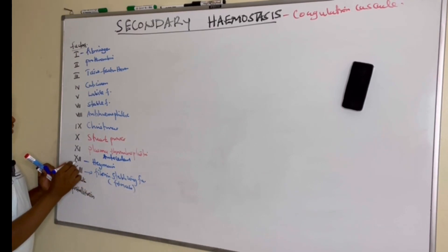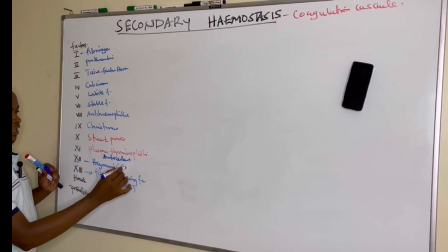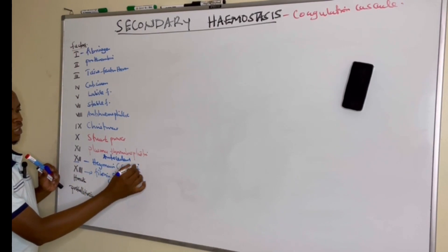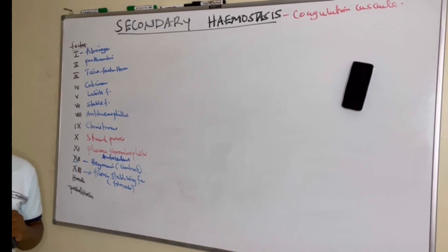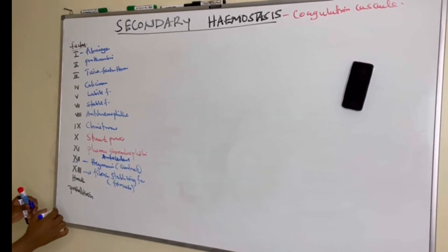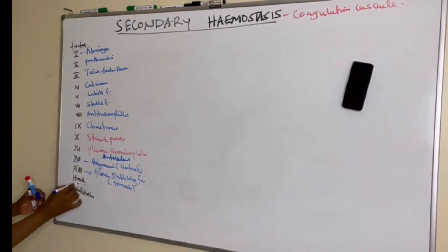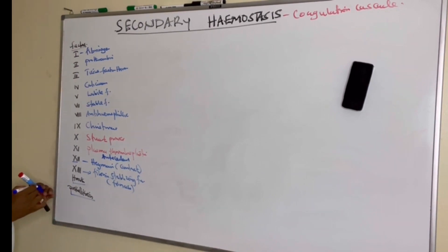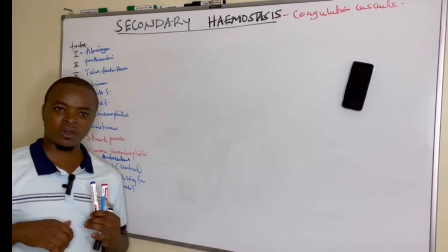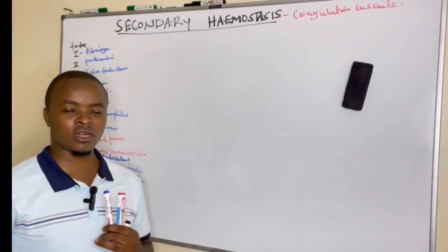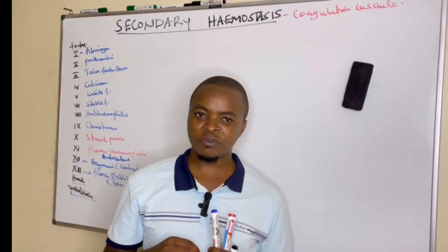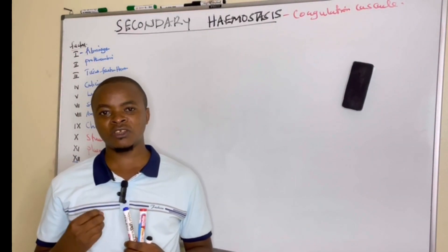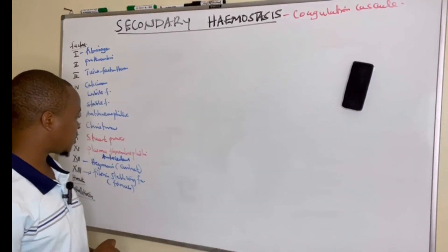Factor twelve, which is the Hageman factor, can also be called the contact factor, because it is triggered by contact with a surface. The last components are high molecular weight kininogen and prekallikrein. So thirteen factors plus high molecular weight kininogen and prekallikrein are the ones that play a big role in secondary hemostasis.